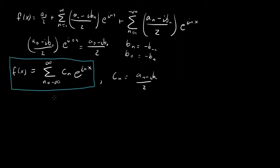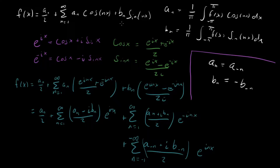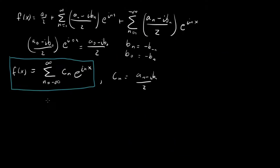We've managed to radically simplify our original series. It used to be a three-term expression with sines and cosines, requiring us to track both aₙ and bₙ separately. Now the whole thing is written in terms of just one coefficient cₙ and one exponential e to the inx. Though you might complain that cₙ is still expressed in terms of aₙ and bₙ, and solving for those independently is still a bit annoying.